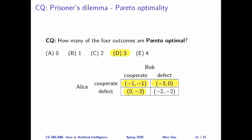It turns out three of the four outcomes are Pareto optimal. The only outcome that's not Pareto optimal is the Nash equilibrium and the dominant strategy equilibrium, which is defect-defect. Let's look at the derivation of this answer.